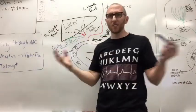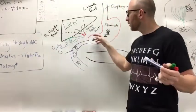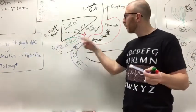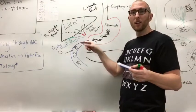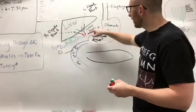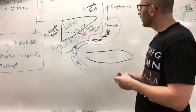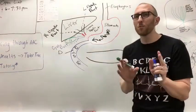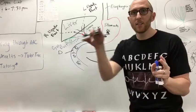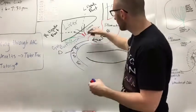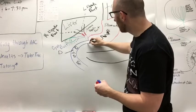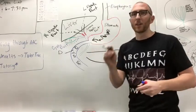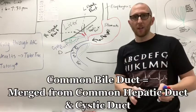And the cystic duct, it's a two-way street. You can go into the gallbladder, store it, concentrate it. Or bile can leave the gallbladder and go on out. Now let's say we're going out the gallbladder. It merges with the common hepatic duct right here and forms our final duct to get down to the duodenum. This one's going to be a long duct here. Very long duct. And this one's called the common bile duct.